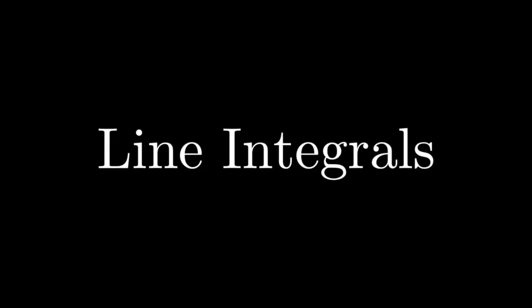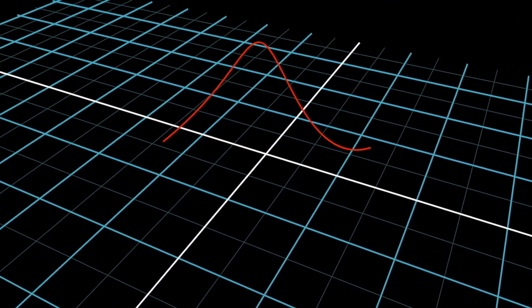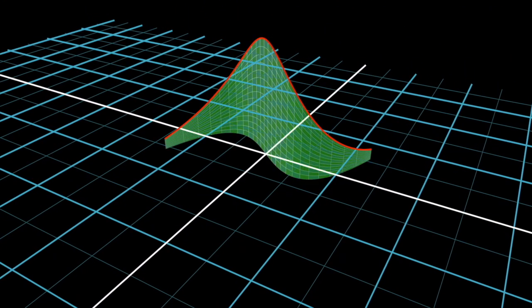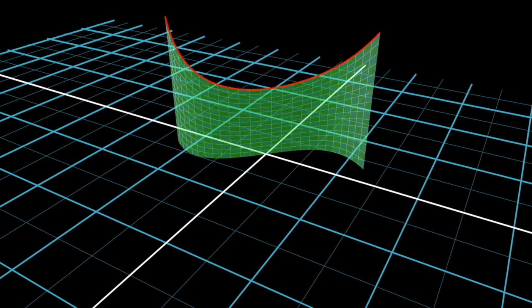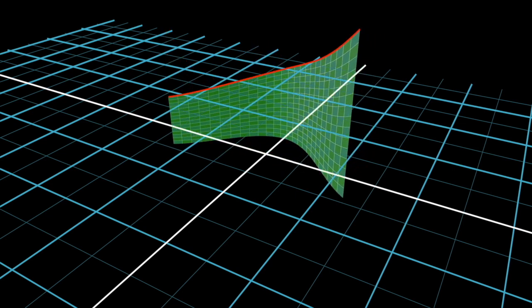Line integrals is another example of where we can put arc length to use. It involves integrating a function over the curve. For a 2D curve, we can think of this as trying to find the area of a curtain with varying heights and directions. Here, arc length allows us to integrate over non-linear intervals. Instead of integrating on a one-dimensional interval from a to b, the length that the function we integrate over does not necessarily have to be straight.